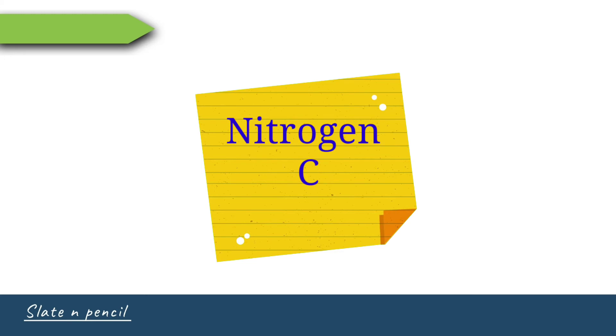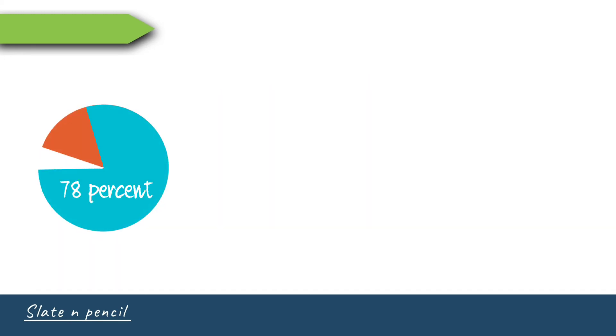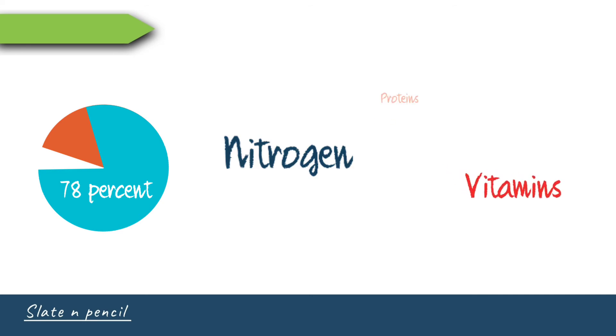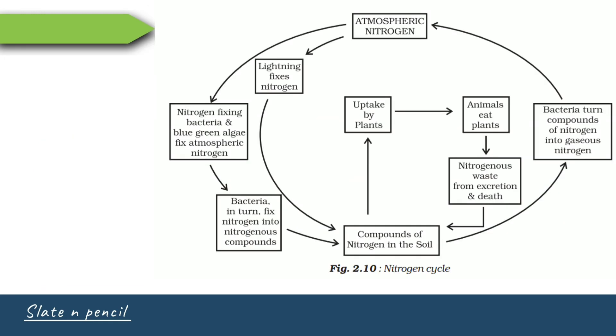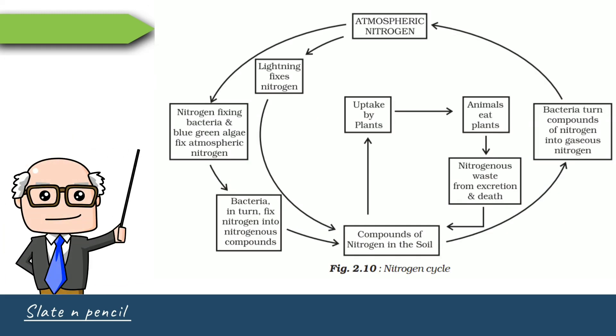In the nitrogen cycle, the atmosphere around Earth contains 78% nitrogen gas. Proteins, chlorophyll, nucleic acids, and vitamins all include nitrogen. However, atmospheric nitrogen cannot be used directly by plants or animals. Certain bacteria and blue-green algae fix atmospheric nitrogen into nitrogenous compounds, and lightning and thunder also fix nitrogen into nitrogenous compounds.